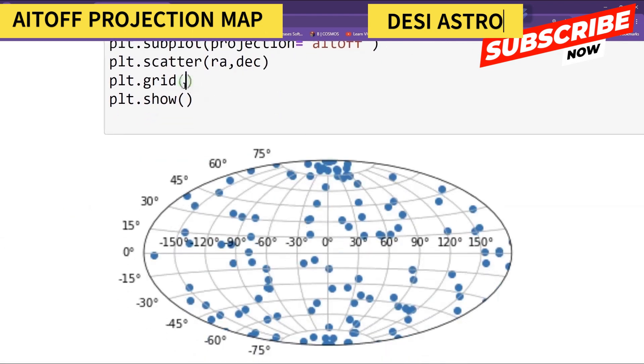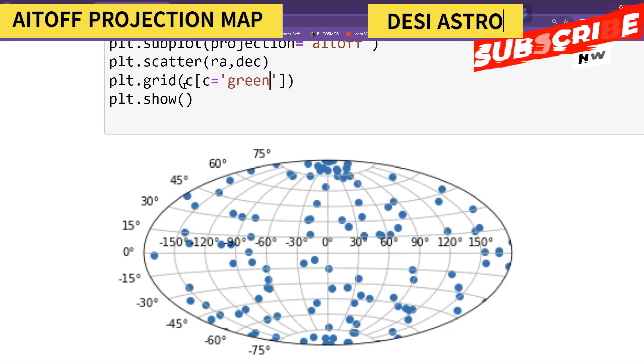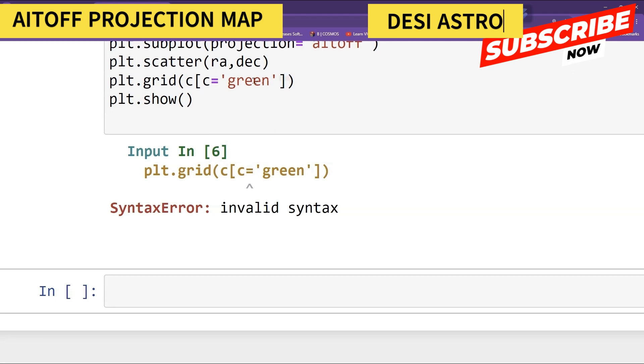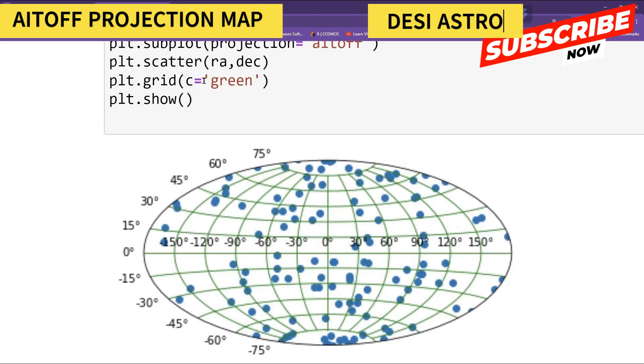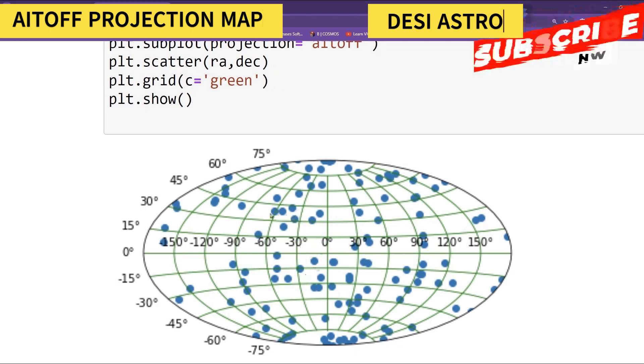You can also make grid color equal to something, say you can make it color equal to green. So here you can see that now grids have been mapped with your green color and your data has been mapped with your dots, right?